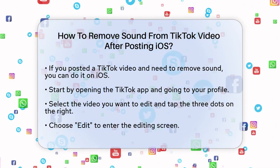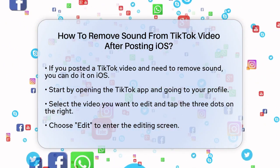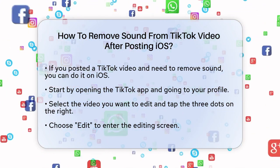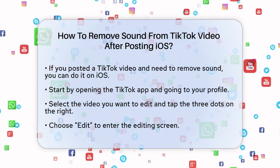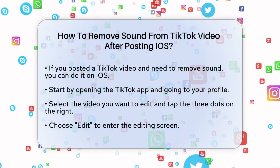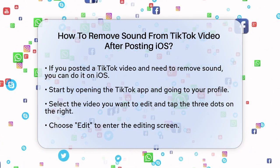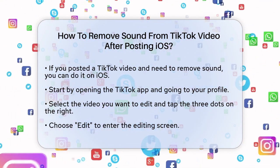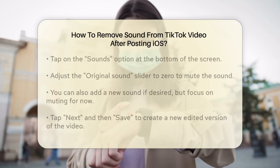To remove the sound from a video you've already posted, you'll need to edit the video again. Open the TikTok app, go to your profile, and select the video you want to edit. Tap the three dots on the right side of the screen and choose Edit. This will take you to the editing screen. Once you're in editing mode, tap on the Sounds option at the bottom of the screen.